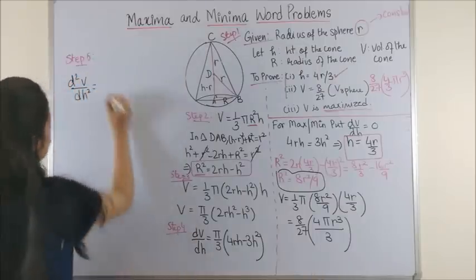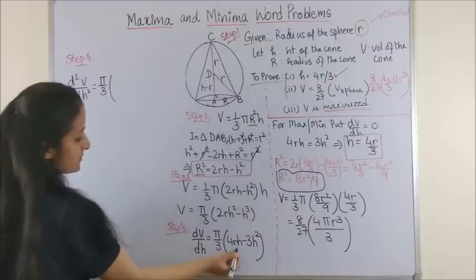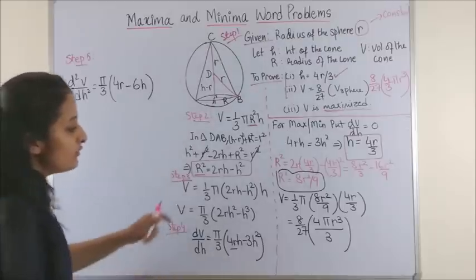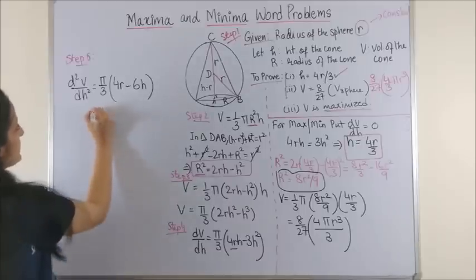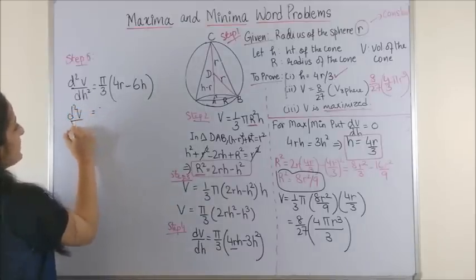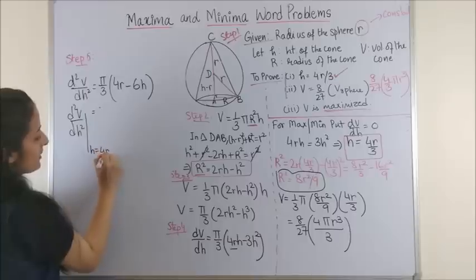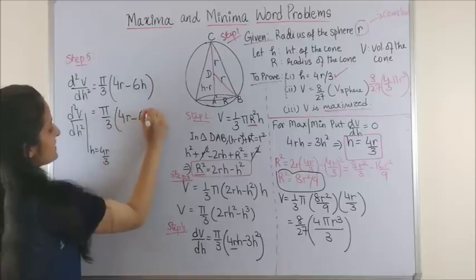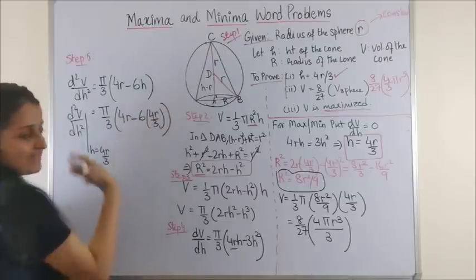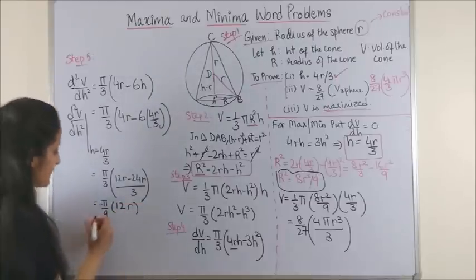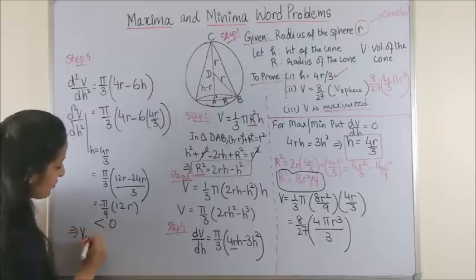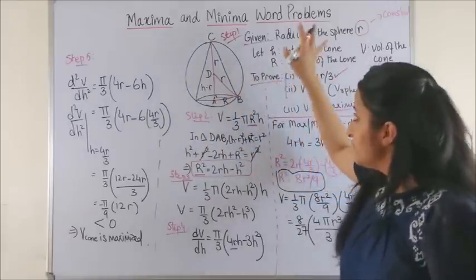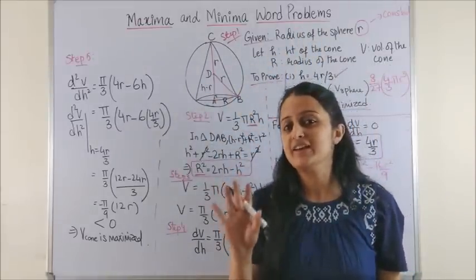Step number 5: let's double differentiate this. D square V by dh square would be pi by 3, and here it becomes just 4r minus 6h. Now we are going to substitute for the value of your small h here. So we get d square V by dh square at h equal to 4r by 3 becomes pi by 3, 4r minus 6 into 4r by 3. Let's simplify this. So you see you get a negative sign, less than zero. This means volume of the cone is maximized.